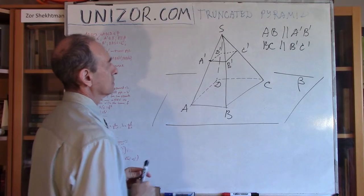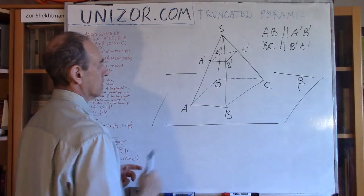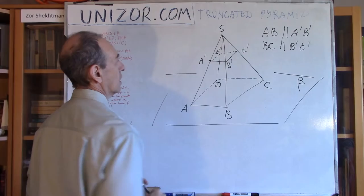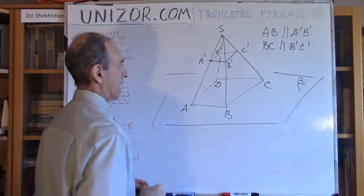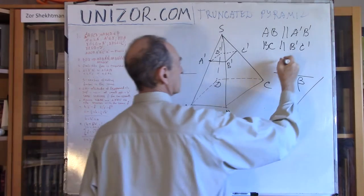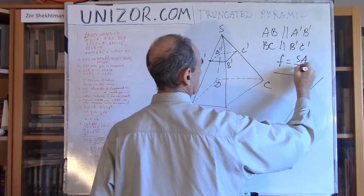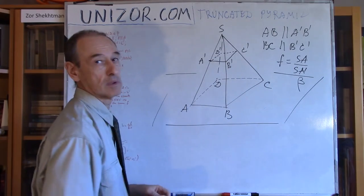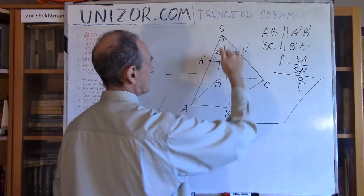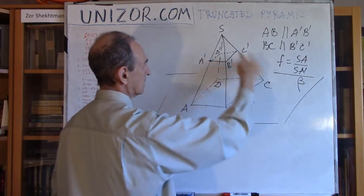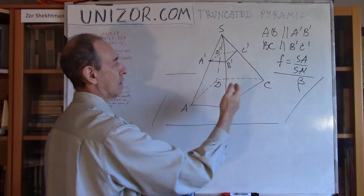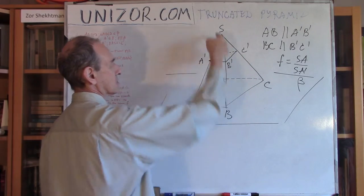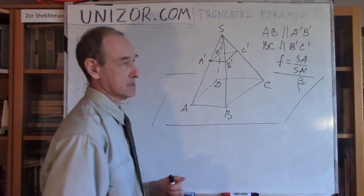Now let's consider triangles S-A'-B' and S-A-B. Since AB and A'B' are parallel to each other, these two triangles are similar with the scaling center at apex S, and the factor being SA divided by SA'. That's exactly the same factor between SB and SB'. And if you consider triangle S-B-C and S-B'-C', you see that SC and SC' also have the same relationship — the same factor F. So this factor F is shared among all corresponding edges, because the factor of each consecutive pair equals that of the next, and they're all the same.